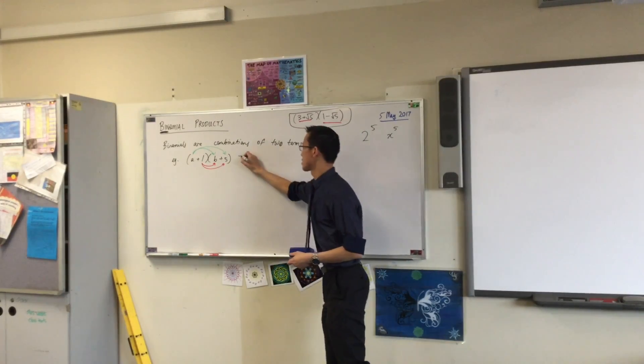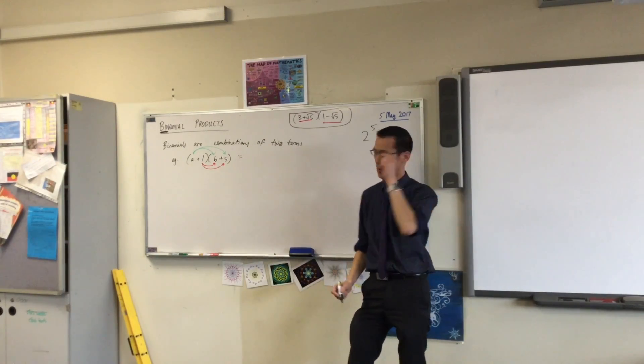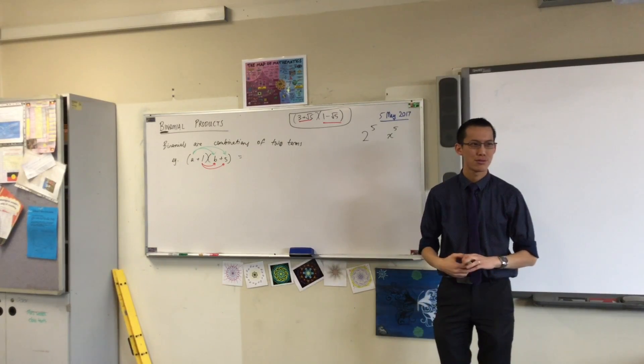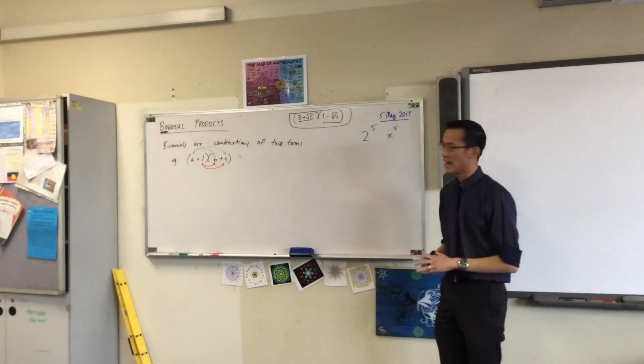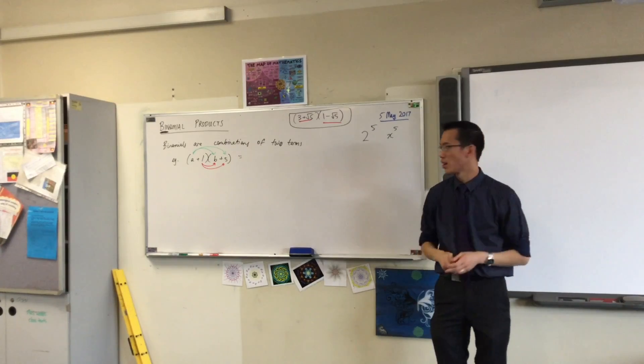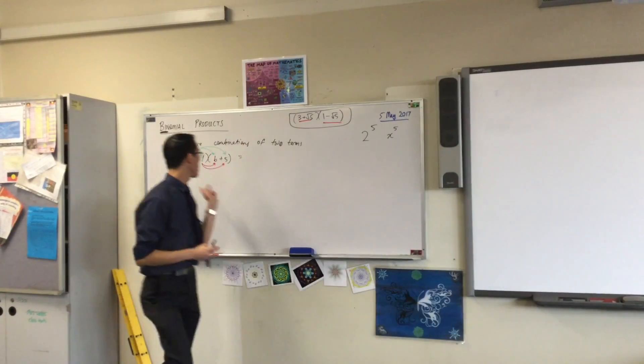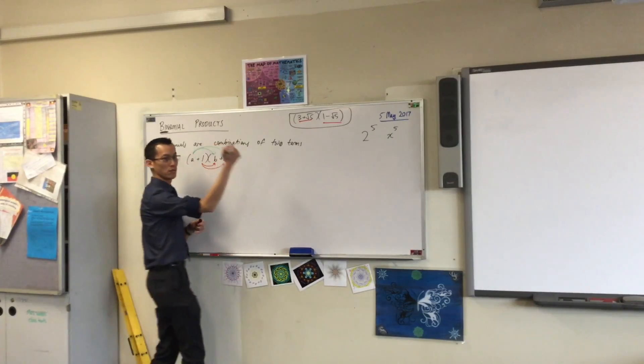So, let's actually go ahead and do this. Let's just crunch the numbers. Okay? Let's do the green ones first, up the top. When I expand for the first bit, you're going to do A multiplied by B, which gives you AB.